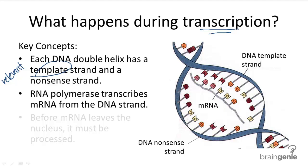Each of the DNA nucleotides pairs with one of the RNA nucleotides. Guanine will always pair with cytosine and uracil will always pair with adenine. So through the principle of complementarity, this is how the mRNA will be synthesized with the correct genetic information.